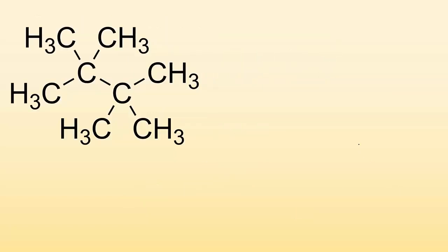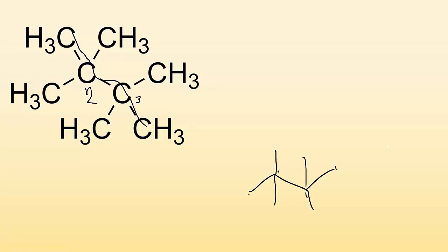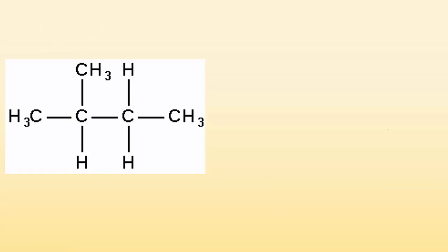How do you draw the shorthand for this structure? I have a long chain of four carbons, so I go one, two, three, four — giving me four carbons in a row. Off of the second carbon I have two carbons coming off: boom, boom. And off of the third carbon I also have two carbons coming off. So that's what that would look like.